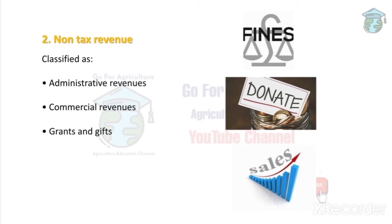In tax revenue, the sources include income tax and excise duty. Non-tax revenue includes sources that are not tax-based — like fines, which are not a source of tax revenue, and grants. For example, in case of a natural calamity, if one state donates money to another state, it is called a grant — a key example of non-tax revenue.